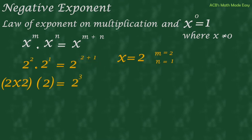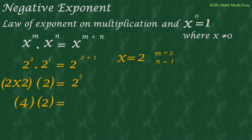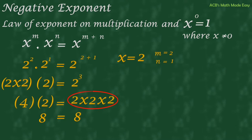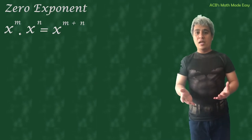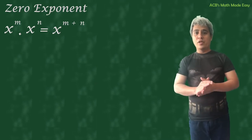2 times 2 equals 4, times 2 equals 8 — because 2 cubed means 2 times 2 times 2, which equals 8. So we have proven the law of exponent on multiplication.